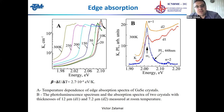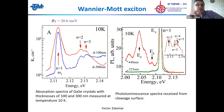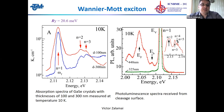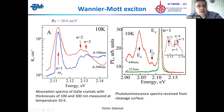This Frenkel exciton can be observed at room temperature. At low temperature, in the absorption spectra we see a very sharp line corresponding to another exciton — a Wannier-Mott exciton — because it has a very low binding energy, around 20 millielectron volts. When exciting our sample with different lasers — a helium-cadmium laser and a semiconductor laser — we see a very sharp line corresponding to the Wannier-Mott exciton and a broad line corresponding to the Frenkel exciton.